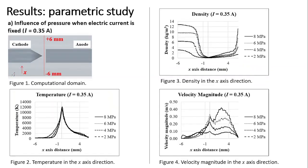A parametric study was performed to determine the effect of pressure. The pressure was varied between 2 and 8 MPa, and the electric current was fixed at 0.35 amps.